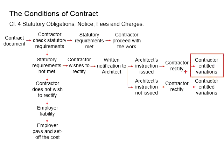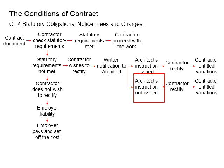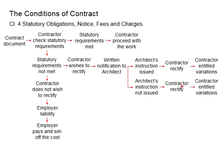If architect's instructions are issued, the contractor can rectify accordingly, and for the rectification work the contractor is entitled to claim variations. If the architect is silent on the issue and no architect's instructions are issued, the contractor will still need to rectify, because complying with statutory requirements is the utmost priority. The contractor is still entitled to claim variations. If the contractor does not wish to rectify, the liability falls on the employer, who shall pay the penalty and then set off the cost from the contractor.